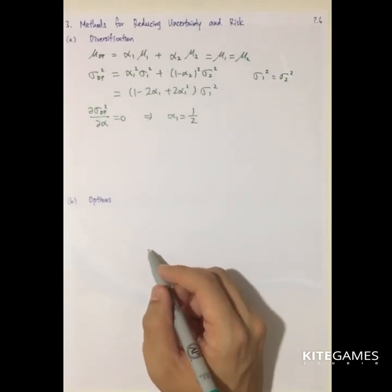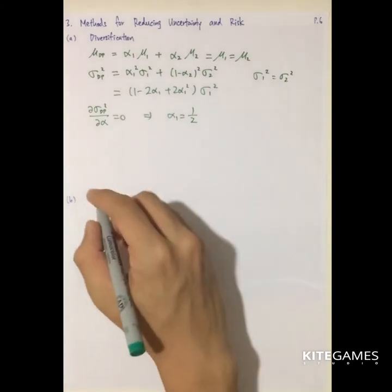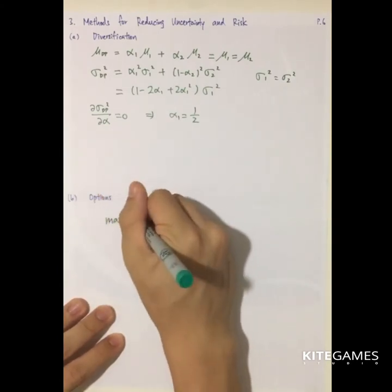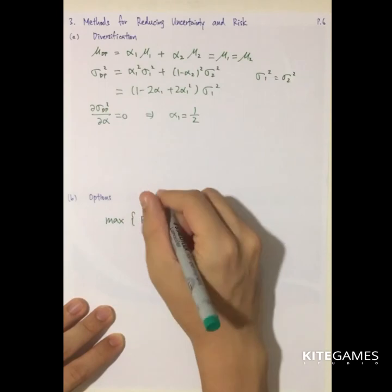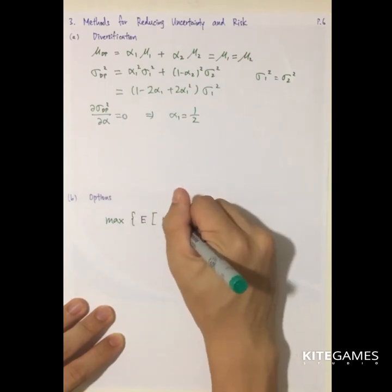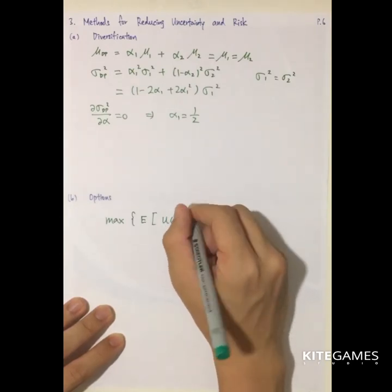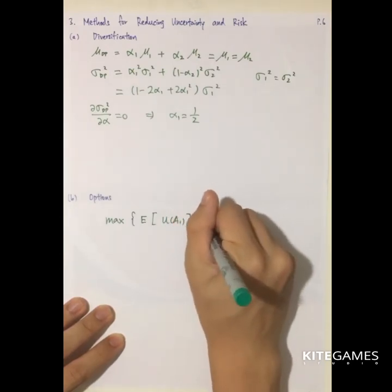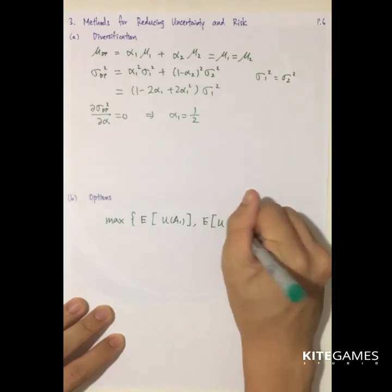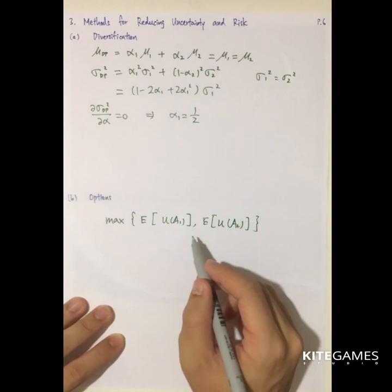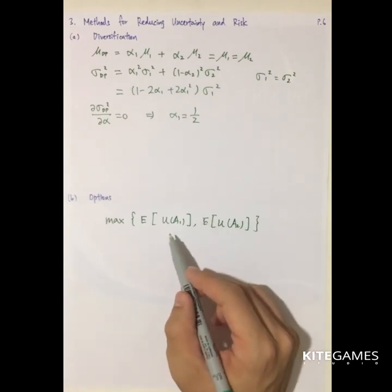So option is a right to sell a share or a right to buy a share. So if you don't buy the options, if you are given two shares, you will get the maximum of the expected utility of share A and expected value of share A2. So if you don't want to use this, so this is equal to the expected return of your share.